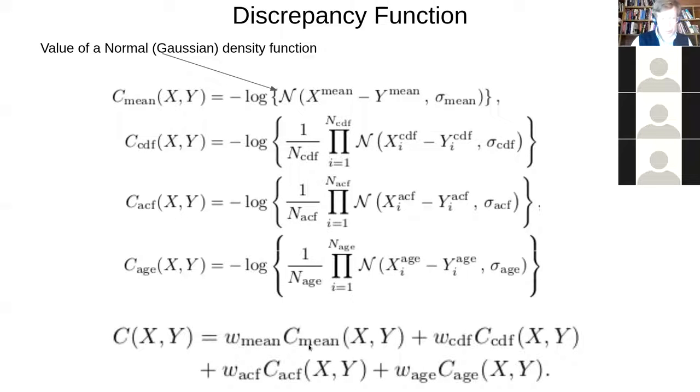So the idea here is we have a discrepancy function. Why do we have a discrepancy function? Because we're trying to adjust these parameters such that we minimize the discrepancy between, on the one hand, values from the model, x, and values from the world, y. And it's a weighted sum of discrepancies with respect to four different types of differences of sub discrepancies. Each of these types of sub discrepancies characterize discrepancy with respect to some type of observable.